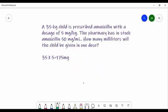Okay, a 35 kilogram child is prescribed amoxicillin with a dosage of 5 milligrams per kilogram. The pharmacy has in stock amoxicillin 50 milligrams per 1 mL. Remember, whenever you don't see a number in front of mL, you automatically assume that it's a one. So we're going to say 50 milligrams per 1 mL. How many milliliters, so our answer should be in milliliters, will the child be given? Now I've already kind of given you some hints here. We don't need to do any conversions with kilograms to pounds because the conversion has already been done. So we need that 35 kg. We also need 5 milligrams per kilogram, which means that for every kilogram in the body, they need to get 5 milligrams of the drug.